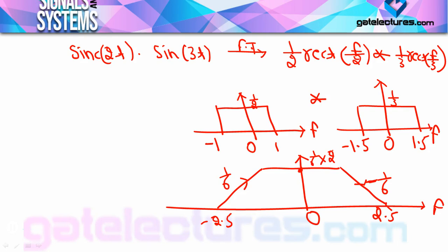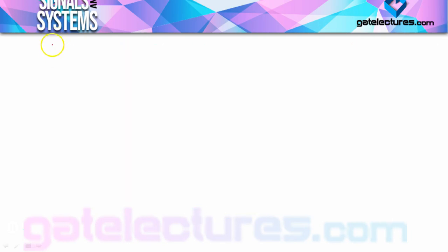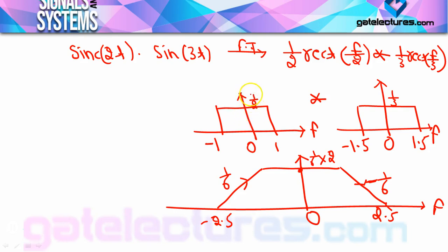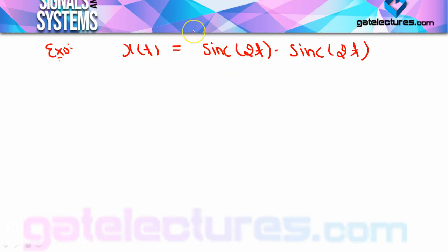अगर x(t) = sinc(2t)·sinc(2t) हो, तो आप इसे square करके भी solve कर सकते हैं। Multiplication property का use करके: (1/2)·rect(f/2) convolved with (1/2)·rect(f/2)। जब भी दो rectangles जिनकी width same हो उनका convolution करते हैं तो एक triangular pulse बनती है — यह आप try करिए, कोई doubt हो तो comment section में post करिए या हमें mail करें।